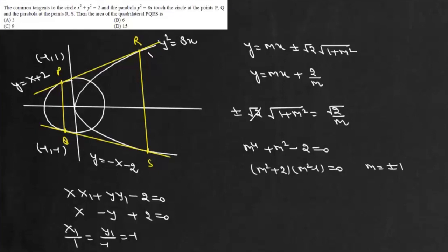For this parabola, we know that point of contact it is given by a by m squared and 2a by m. Now in this case, a is 2 and m is 1. So it will be 2 comma 4. So coordinate of R is 2 comma 4 and this coordinate will be 2 comma minus 4.